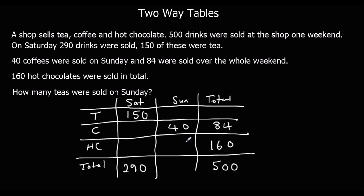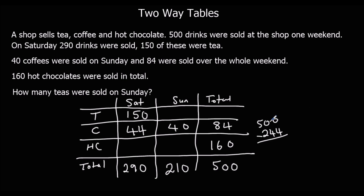Now we fill in the missing information. In the totals column: 290 plus what makes 500? That's 210, so Sunday total is 210. Then coffees: something plus 40 equals 84, so Saturday coffees is 44. For the tea total: 160 plus 84 is 244, and 500 minus 244 is 256, so the tea total is 256. Saturday teas are 150, so to get to 256 that's 106.